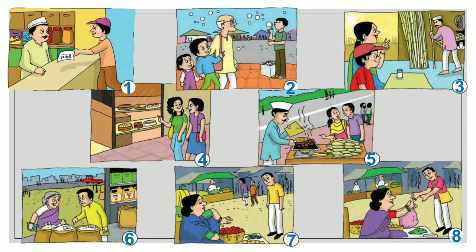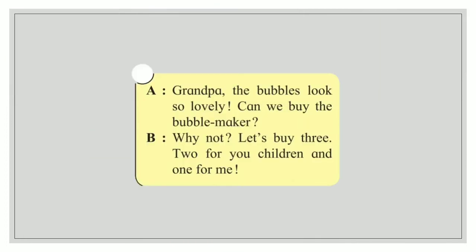We will find where the bubble maker is. Look at picture number 2 — there is a grandfather and two children, and also a bubble maker. So this conversation is related to picture number 2. We will put number 2 here.